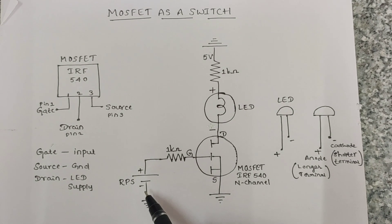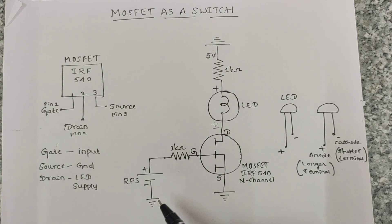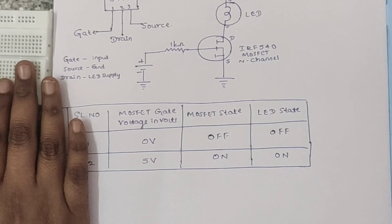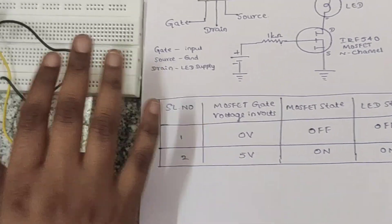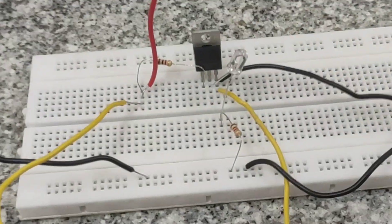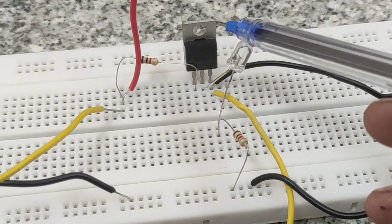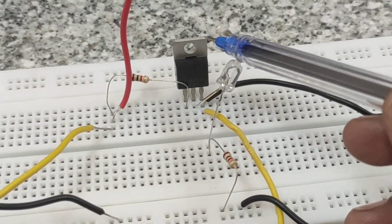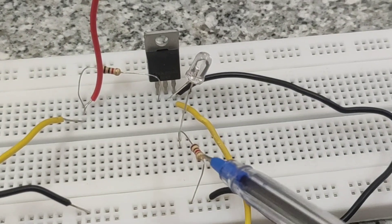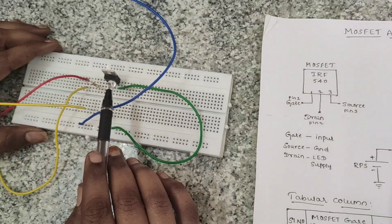From the RPS (Regulated Power Supply), the positive terminal is connected to a resistor, and the other end of that resistor is connected to the Gate terminal. The negative terminal of the RPS is directly connected to the ground. The components here are the IRF540 MOSFET, the LED, and two 1kΩ resistors.